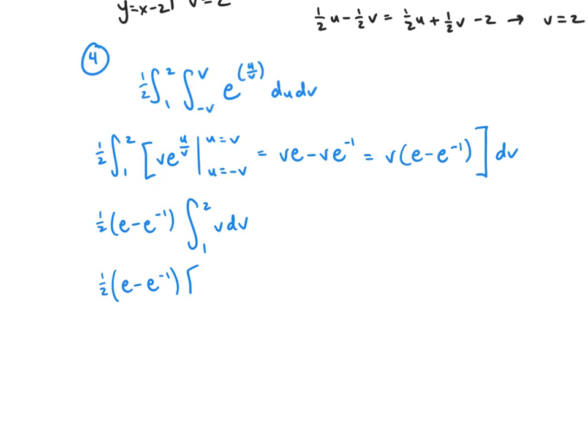So we have that constant times the integral from 1 to 2 of v dv. And so that gives us 1/2 v² from 1 to 2, which, if you remember, that's equal to just 3/2. So there we go. We have our answer 3/4 multiplied by the quantity (e - e^(-1)). And you can write that a variety of ways. But that's going to be your value.